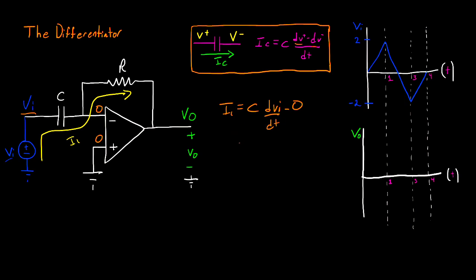Now we can do the easy one and write Ohm's Law. For R, we have I1 is equal to 0 minus Vo divided by R. Now I can set my two I1 equations equal to each other, and I'll have minus Vo divided by R is equal to C dVi dt.